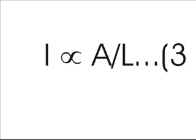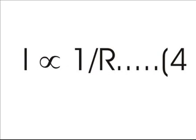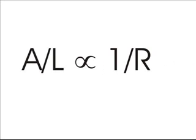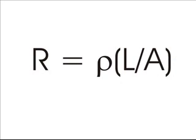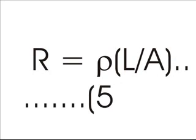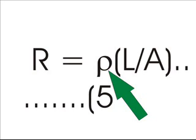From equation 3 and equation 4, we get A/L is proportional to 1/R, or R is proportional to L/A, or R equals ρL/A. Say this is equation 5. Here ρ is a constant depending upon the nature of the material and it is known as the specific resistance or resistivity of the material of the conductor.